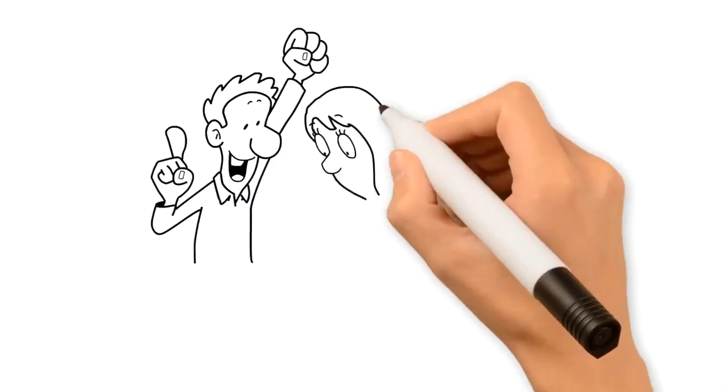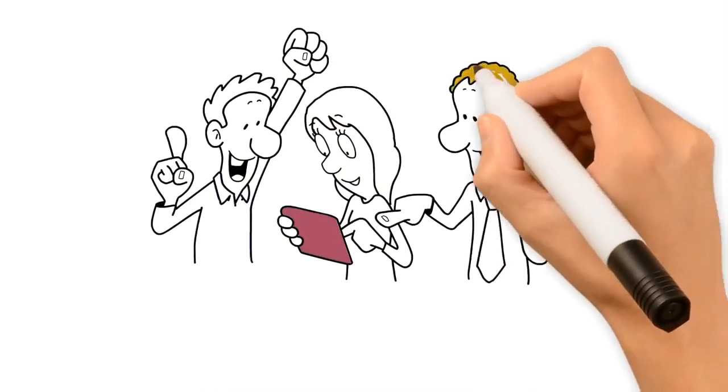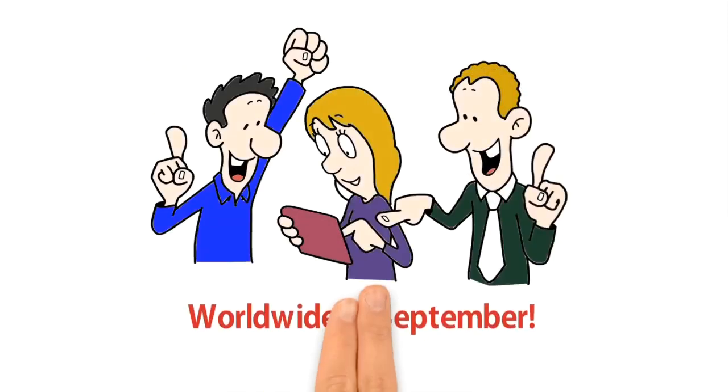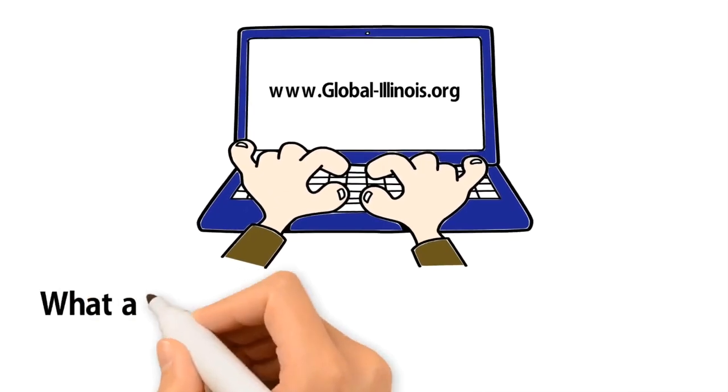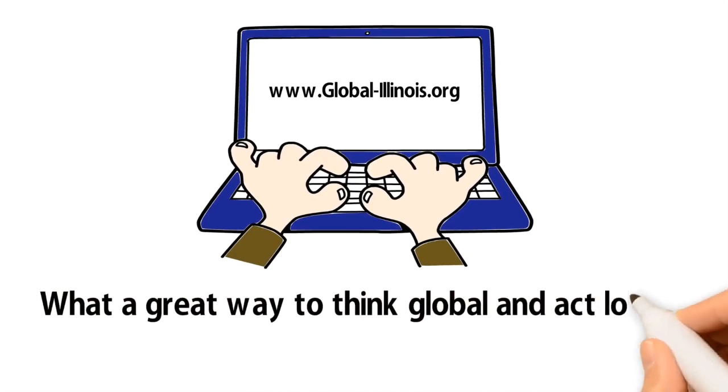You can even access data and see their cleanup on a map of cleanups occurring worldwide in September. Check out www.illinoisglobalscholar.org or www.global-illinois.org to learn more. What a great way to think global and act local.